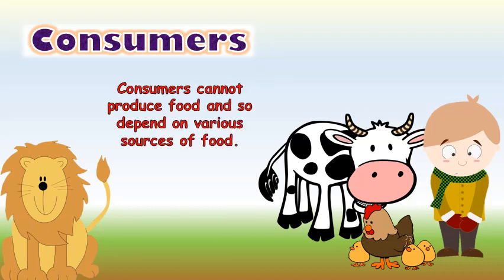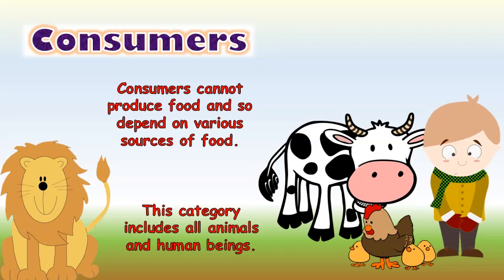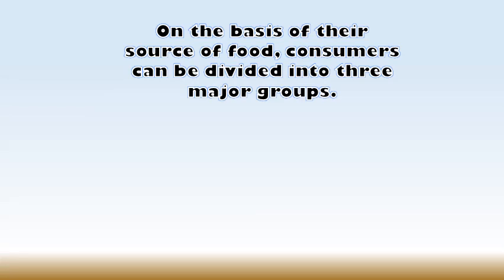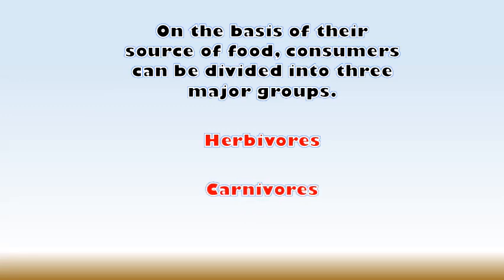Consumers cannot produce food and so they depend on various sources of food. This category includes all animals and human beings. On the basis of their source of food, consumers can be divided into three major groups: herbivores, carnivores, and omnivores.